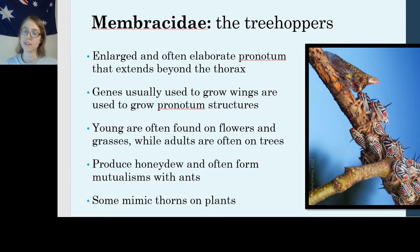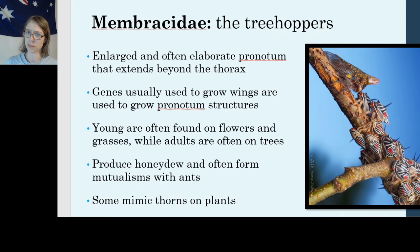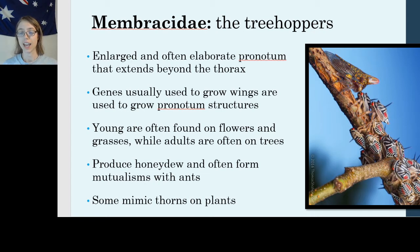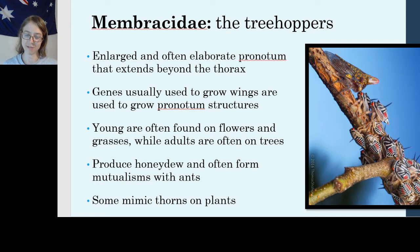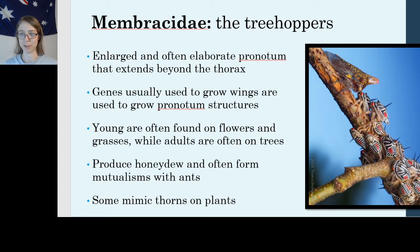The young and the adults are often found in different places — nymphs feed often on herbaceous plants while adults feed on trees, in some cases. Finally, membracids are interesting because they produce honeydew, which is an excretion full of sugar, and it allows them to develop mutualisms with ants. The ants, which have stingers and are often quite aggressive, will defend the treehoppers in exchange for honeydew. Some people say the ants are farming the treehoppers — or aphids, which they also do this with — as their cows.